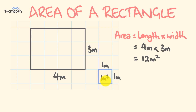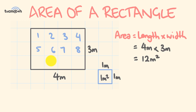Meters times meters gives us meters squared. We can also verify this by counting how many one-meter-squared units occur in our rectangle: one, two, three, four, five, six, seven, eight, nine, ten, eleven, twelve. So it's twelve meters squared.